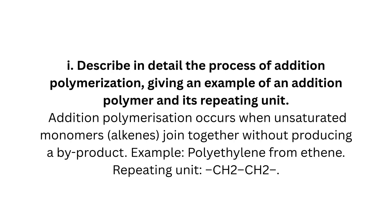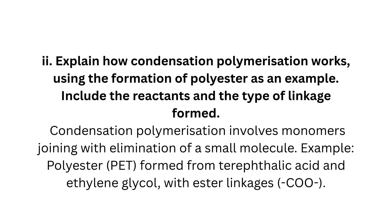Long answer Question 1: Describe in detail the process of addition polymerization, giving an example of an addition polymer and its repeating unit. Addition polymerization occurs when unsaturated monomers (alkenes) join together without producing a byproduct. Example: polyethylene from ethene. Repeating unit: CH₂CH₂.